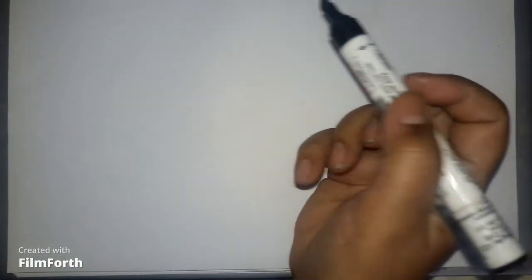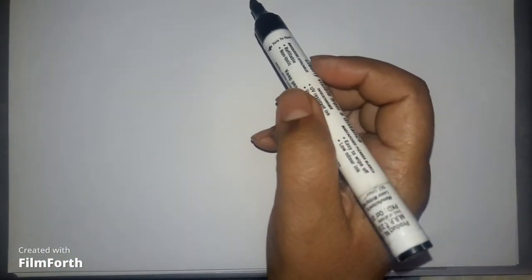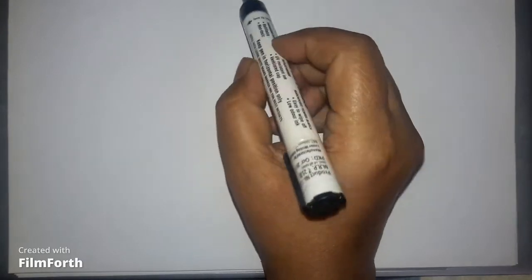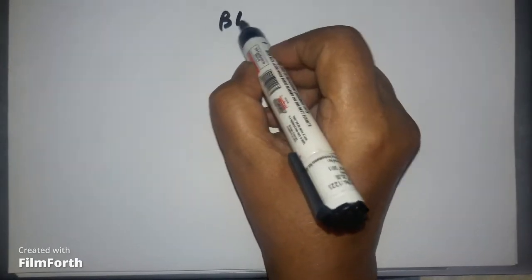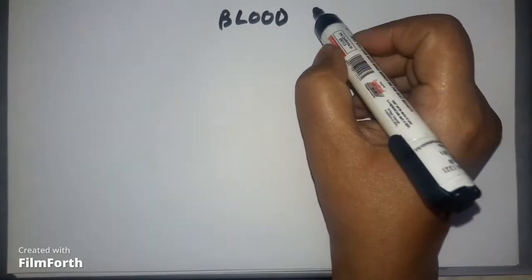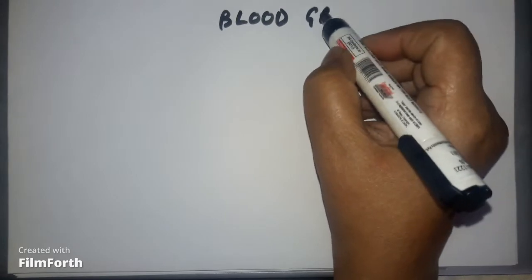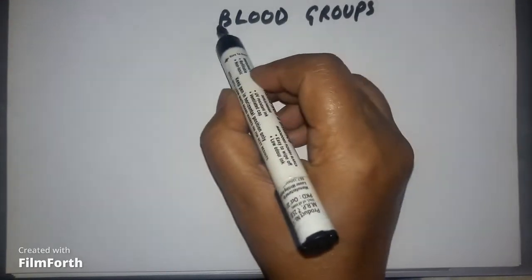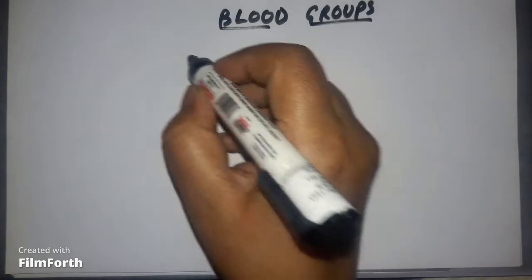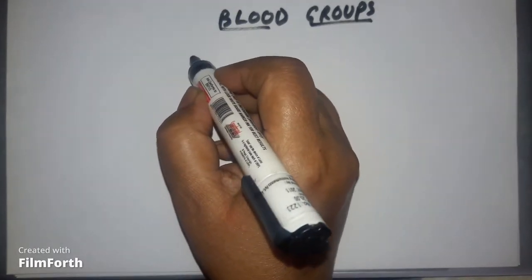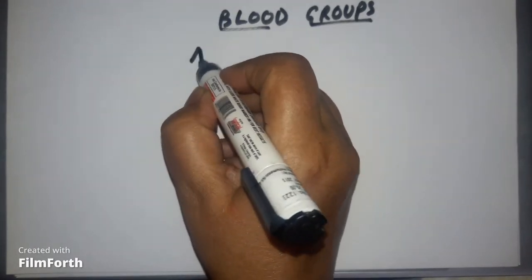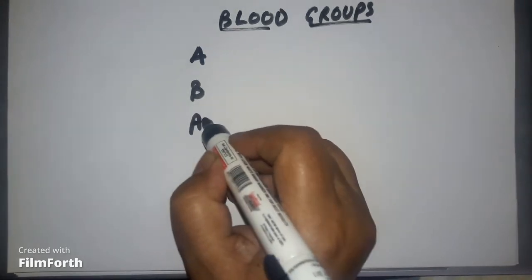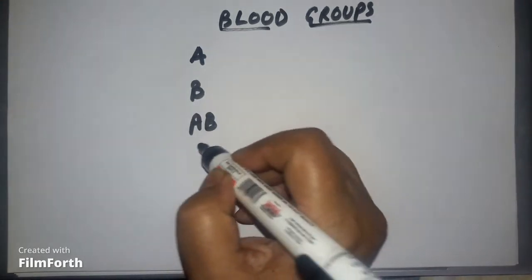In this video we will discuss inheritance of blood groups. In human beings we have four types of blood groups: blood group A, blood group B, blood group AB, and blood group O.